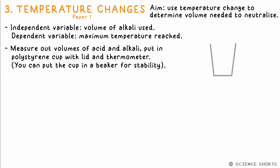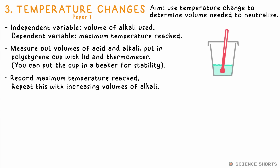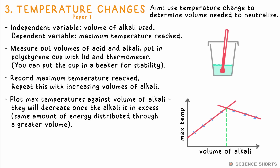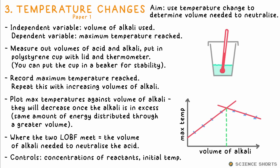Chem 3: temperature changes. We carry out a reaction in a polystyrene cup, which is well insulated, and a thermometer pokes through a lid that sits on top. The cup can be put in a beaker for stability. We add the other reactant, place the lid on, make sure the thermometer bulb is in the liquid, and record the maximum temperature the solution reaches — our dependent variable. We repeat this with increasing volumes of the alkali, our independent variable. Eventually it will be in excess, so the maximum temperature will start to decrease as the same amount of energy released is spread through a greater volume of solution. We can draw two lines of best fit for the rise and fall; where they meet tells us how much alkali was needed to neutralize the acid.